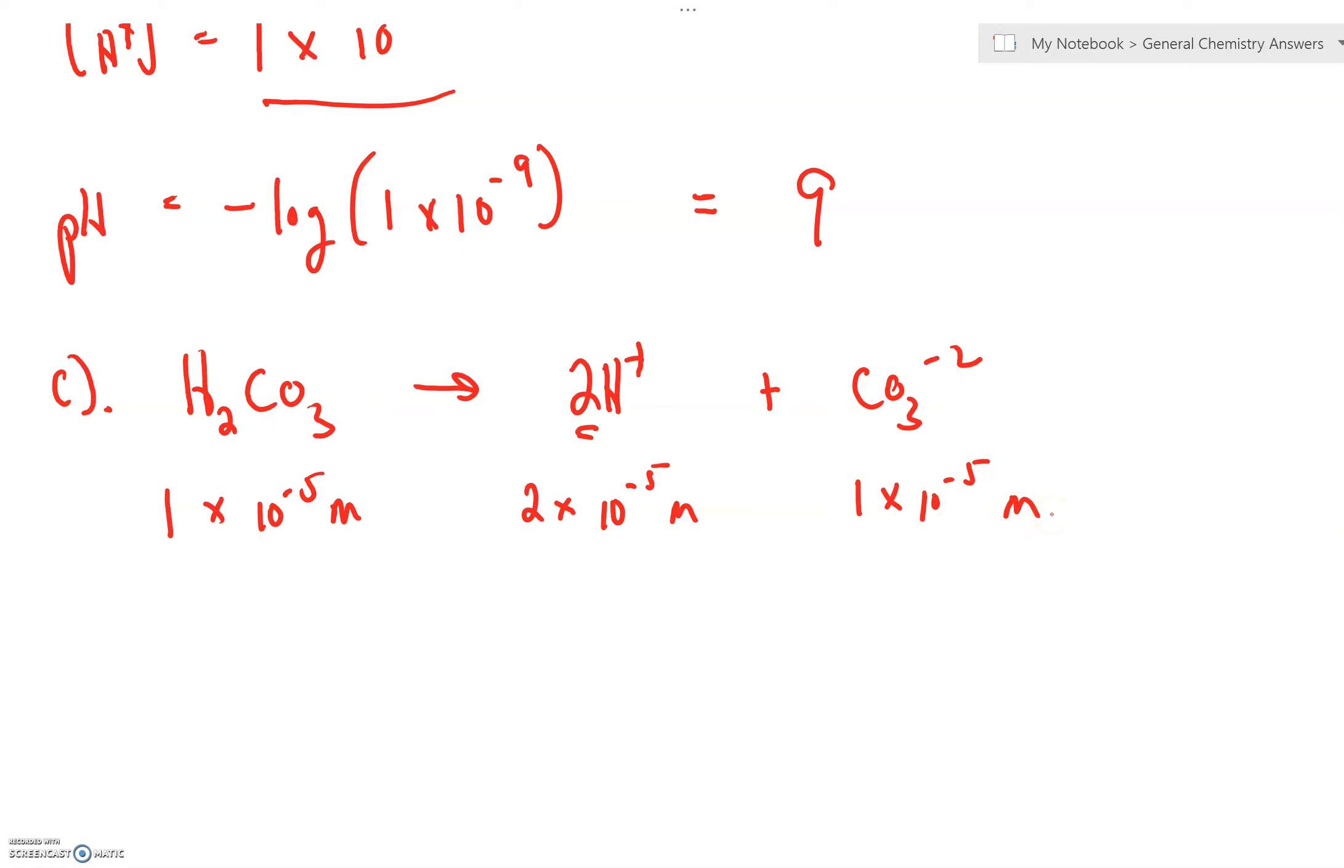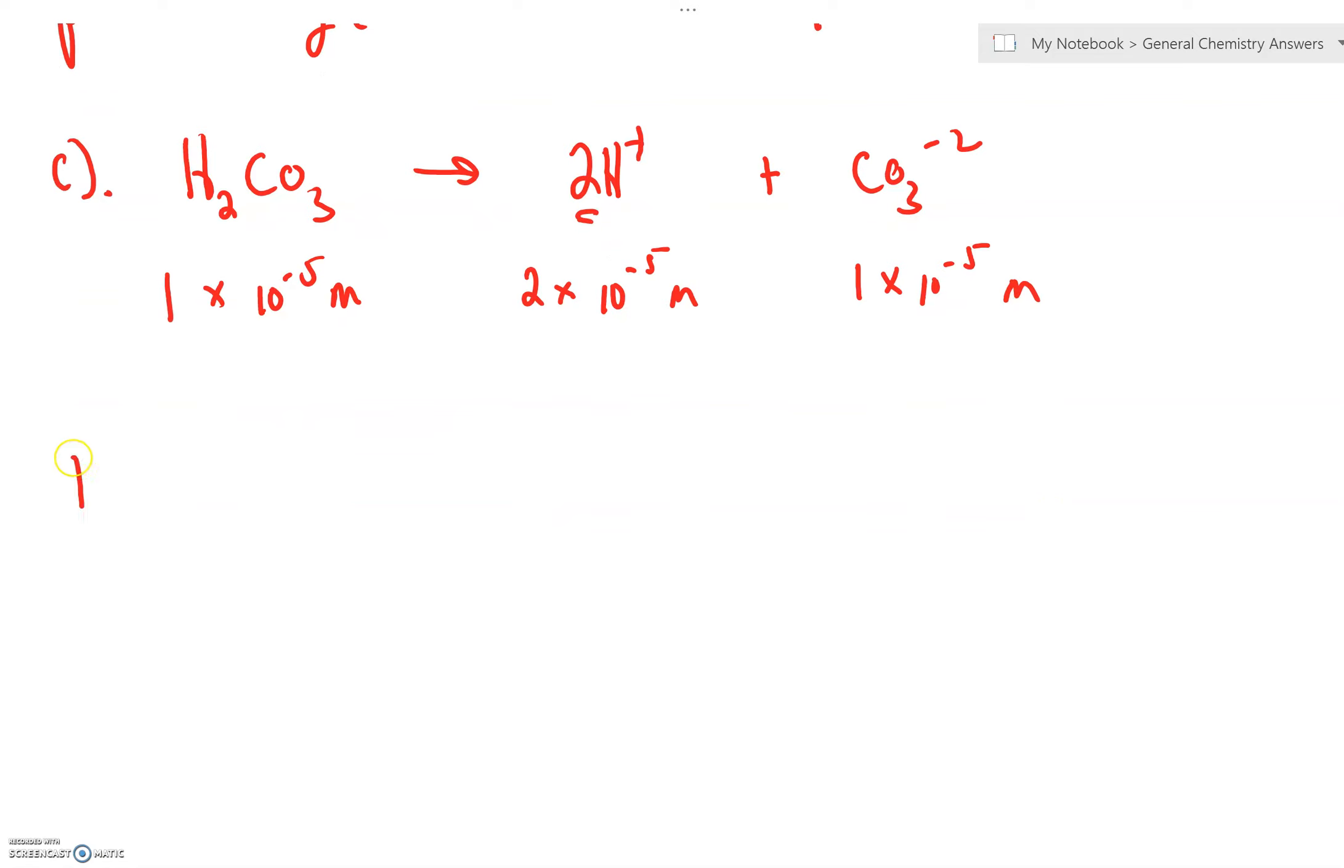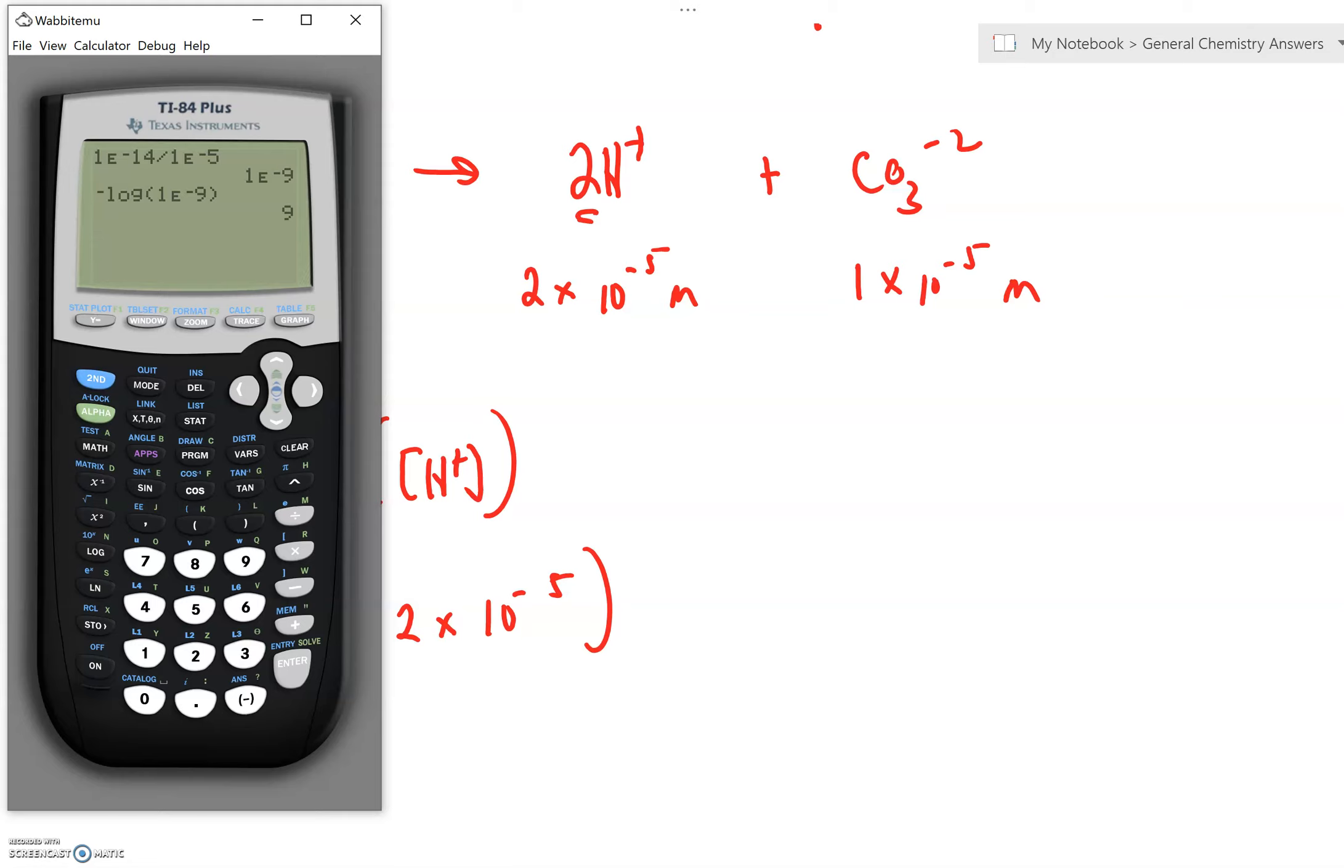We're not worried about that. We are interested in the pH equal to negative log of the H+, which you just found. Negative log of 2 times 10 to the negative 5th molar. Negative log of 2 times 10 to the negative 5th molar is 4.7.